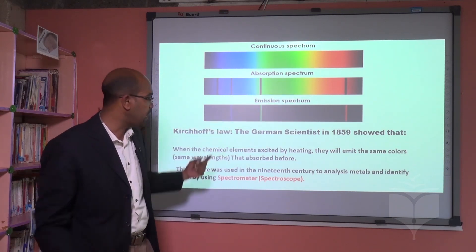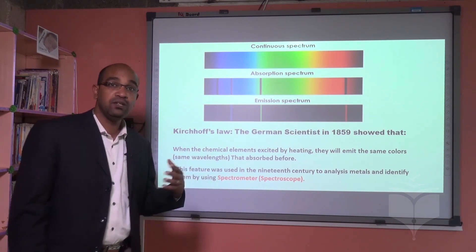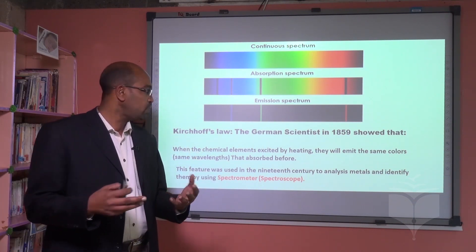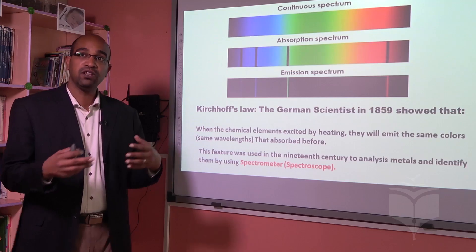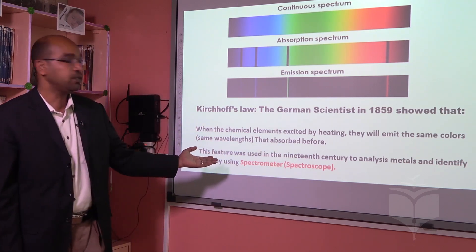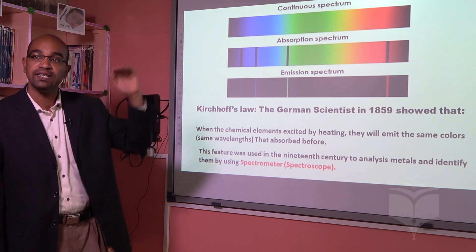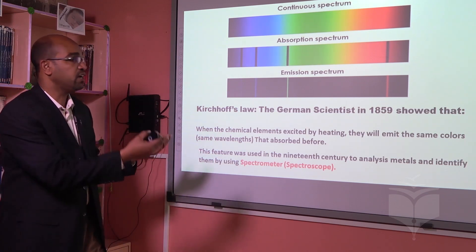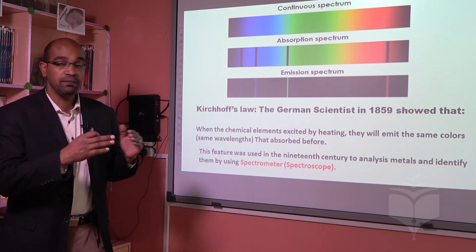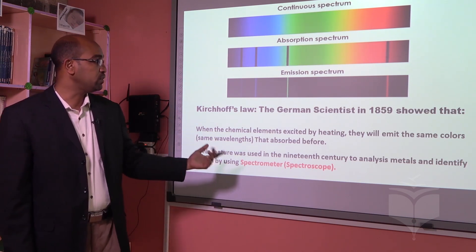Both the emission and absorption spectra can be found by the spectrometer or spectroscope. This was a really useful feature for people in the 19th century, because at that time they didn't know everything about all metals. They found metals in nature, took them to the lab, put them under the spectrometer, and analyzed them until they identified all the elements and put them in a list — which later became the periodic table as we know it today, containing all the chemical elements.